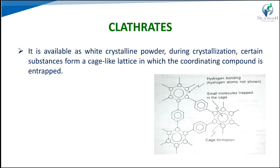Clathrate complexes are cage-like lattice structures in which a coordinating compound is entrapped. Available in white crystalline powder form. During crystallization, certain substances form cage-like lattices. For example, cage-like structures form through hydrogen bonding of hydroquinone molecules, and small molecules trapped in the cage form clathrates.